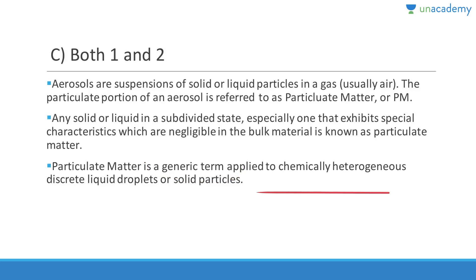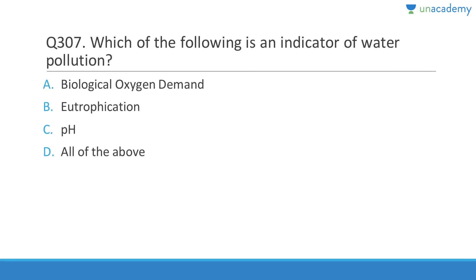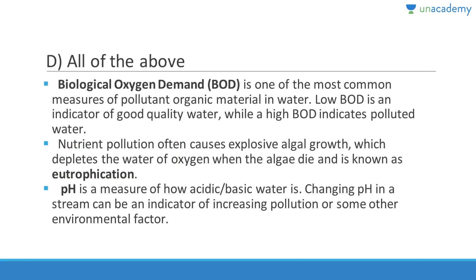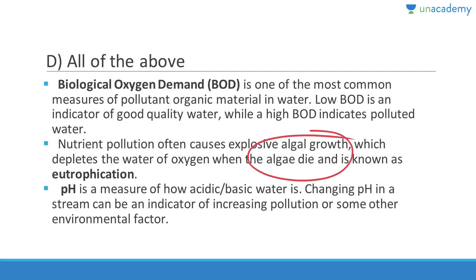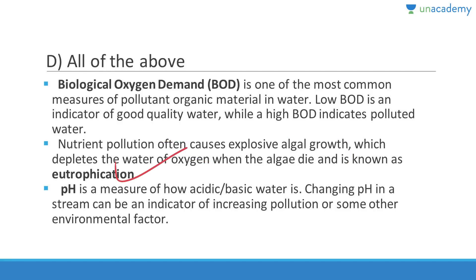Question 307: Indicators of water pollution include BOD (biochemical oxygen demand), eutrophication, and pH. Answer is D (all of the above). BOD measures how much oxygen is required to oxidize organic compounds. Nutrient pollution from nitrogen and phosphorus leads to harmful algal bloom (HAB) — known as eutrophication. pH is a measure of how acidic or basic the water is and can indicate increased pollution.